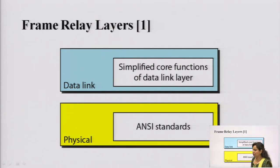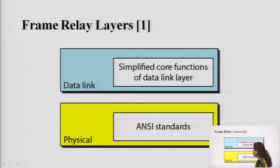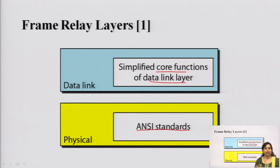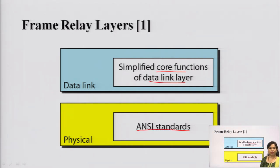Next are the frame layers. From the OSI model, the first two layers — the physical layer and the data link layer — are responsible for data transmission using ANSI standards. The physical layer handles physical data operations, while the data link layer uses simplified core functions for transmission.